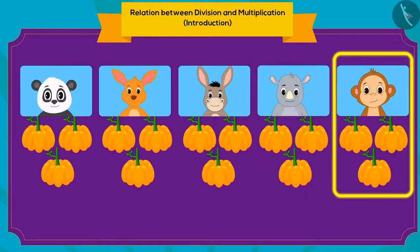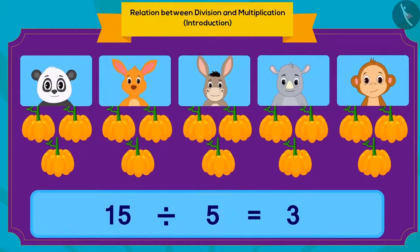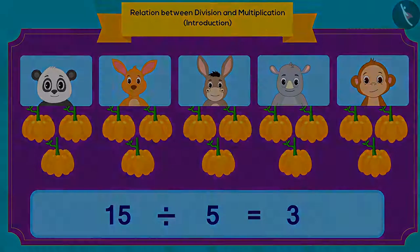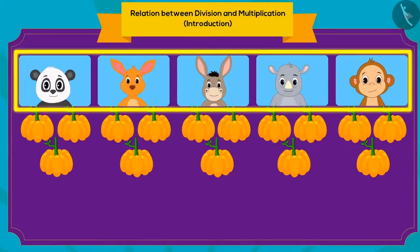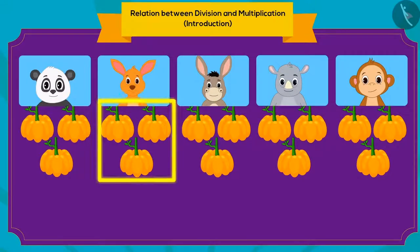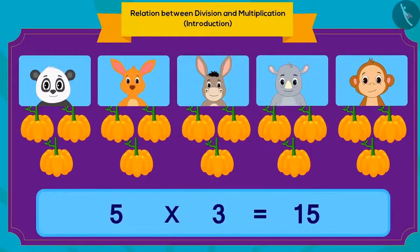How can we write this using division? When you divide 15 pumpkins equally into five parts, you get three pumpkins in each part. We have five friends and each friend will get three pumpkins. We can also write this using multiplication: five multiplied by three is 15 pumpkins.